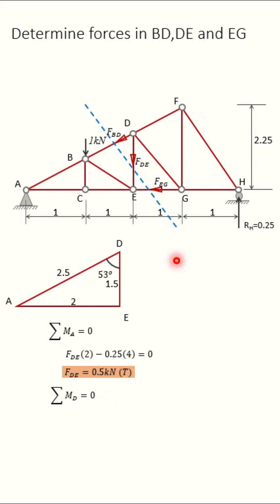Next, sigma MD equals zero. Moment about this point. So moment of FBD and FDE will be zero. You have to calculate moment of FEG and RH. So FEG into 1.5, FEG into this distance 1.5. And RH 0.25 into this distance 2 equals zero. From that, you will get FEG equals 0.33 kilonewtons. Again positive, so tension member.